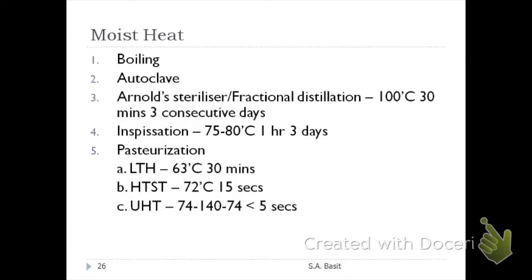Pasteurization is usually used for milk. We cannot use high temperatures for milk because it is made up of protein and will denature. You can use the LTH — Low Temperature Holding method, the classical method — at 66°C for 30 minutes. Or HTST — High Temperature Short Time — at 72°C for 15 seconds. Ultra-high temperature (UHT) starts at 74°C, goes up to 140°C, then back to 74°C, all in less than 5 seconds.